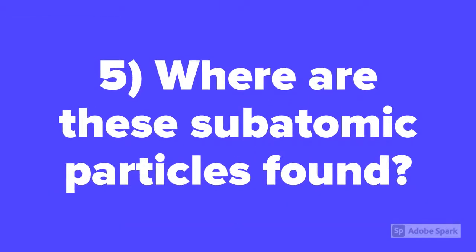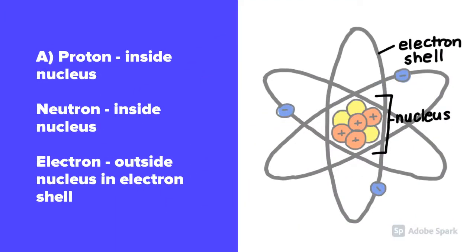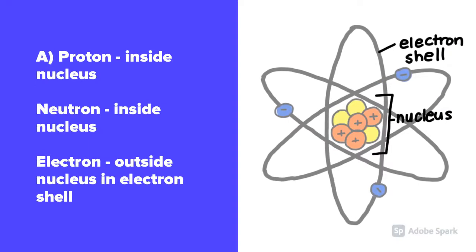Question number 5. Where are these subatomic particles found? Protons and neutrons are inside of the nucleus. Electrons are outside the nucleus in electron shells.